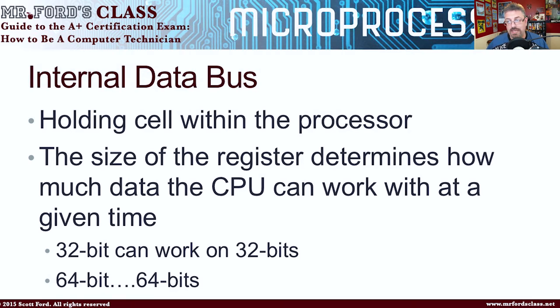The size of the register determines how much data the CPU can work with at any given time. For example, a 32-bit internal data bus — a 32-bit internal register — can work with 32 bits at a time, while a 64-bit register can work with 64 bits, of course. By the way, this is also how we name our CPU. So you might hear of 32-bit computing or 64-bit computing — this is what we're talking about here.